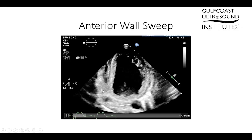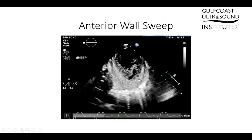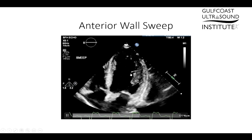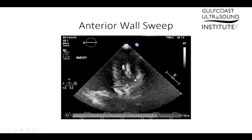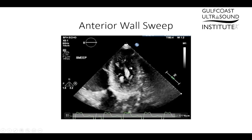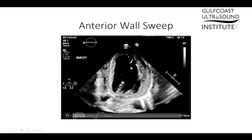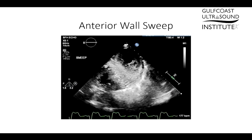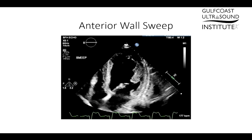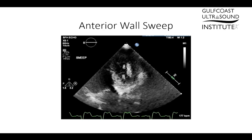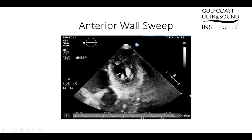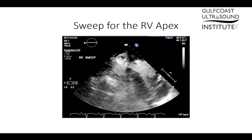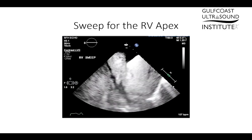Here we have another posterior sweep looking all the way down at the apex, and notice as we come back and look anterior there is a thrombus on the anterior wall. This is a good example of the importance of doing that posterior sweep, but we also want to look anterior as well.